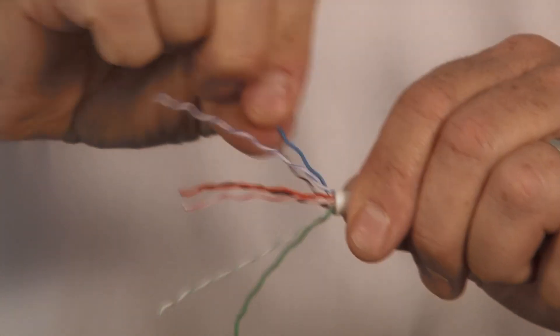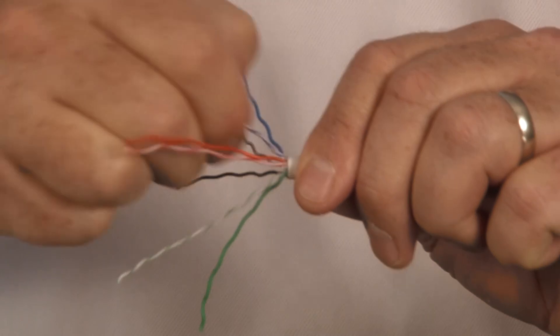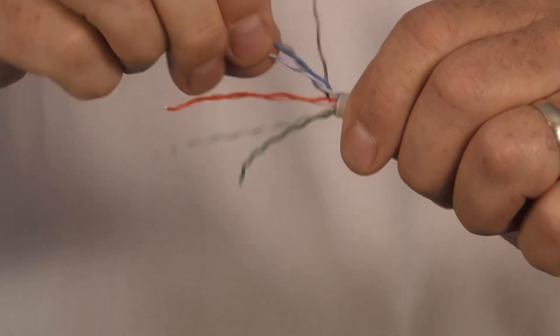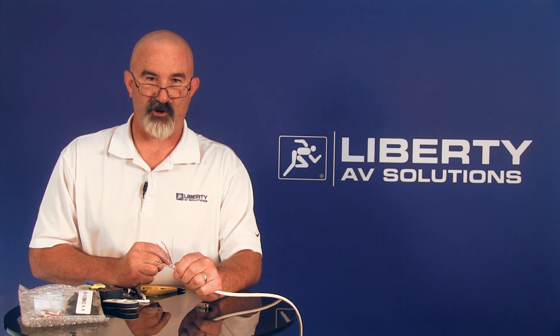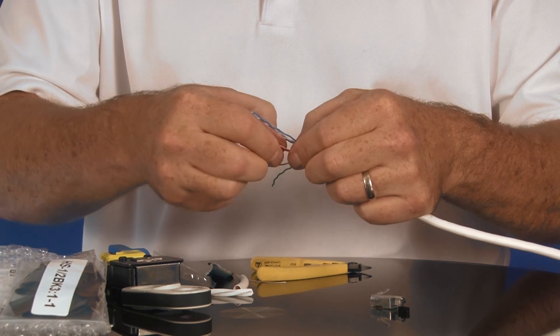Alright, so once you get all the conductors all straightened out and separated, then you put them in your correct wiring code for 568A or 568B, depending on which one you're going to use. For commercial applications, 568B is the standard everybody uses. 568A is more of a residential type standard. The difference between them is 568B only supports one of the old USOC phone lines. 568A supports two of the old USOC phone lines. So for residential use, you might need that. For commercial use, you definitely don't usually need that. So go ahead and put this in the right color code. I'm going to do 568B.